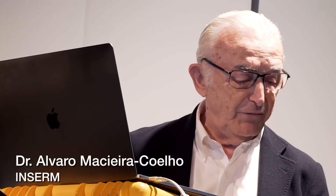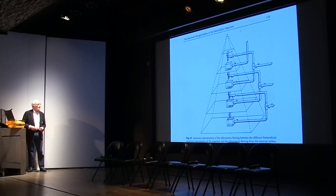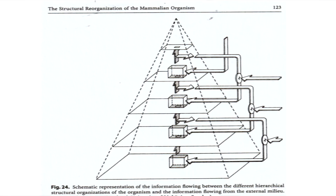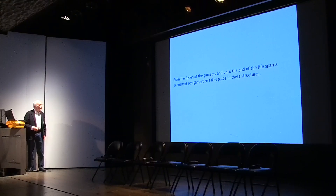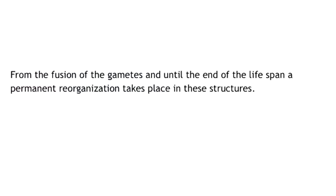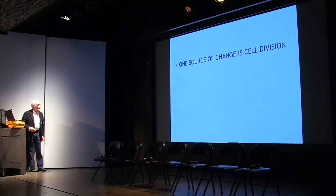I think aging happens by default, and I'm going to tell you why. The human organism is organized in a series of hierarchical structures where information flows depending on the structural integrity of these structures. From the fusion of the gametes until the end of the lifespan, a permanent reorganization takes place in these structures. And one source of change is cell division.